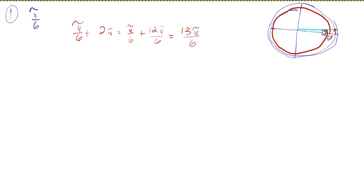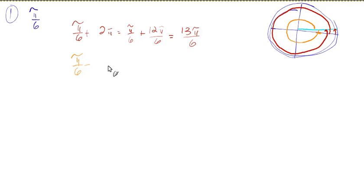We could also start at pi over 6 and go the other direction. The actual angle measure going that way — we go up to pi over 6 and subtract 2 pi. So pi over 6 minus 2 pi equals pi over 6 minus 12 pi over 6, which is negative 11 pi over 6.